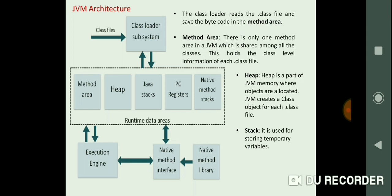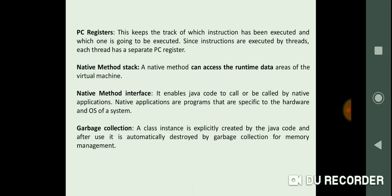This comes to execution engine. Execution engine and native method interface are interrelated, and this interface is provided input from the library. PC registers keep track of the instructions - which will be the next instruction to be executed is under PC registers. Native stack is used for accessing runtime data. Native method interface enables Java code to call or to be called by native applications. Last is garbage collection. Garbage collection is a class instance which is explicitly created by Java code, and after use it is automatically destroyed by the garbage collector for memory management.